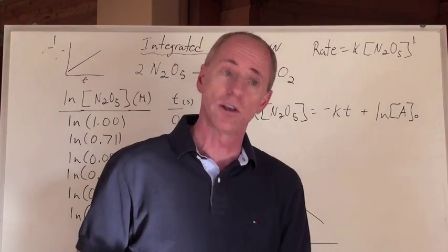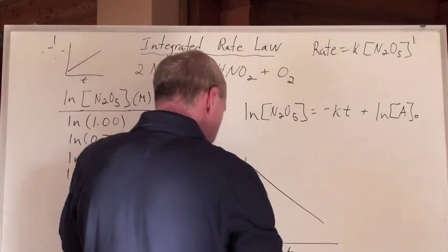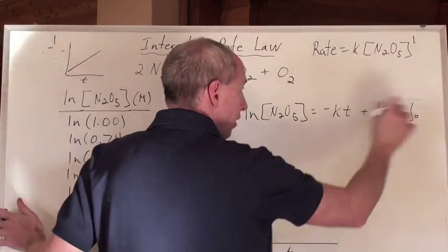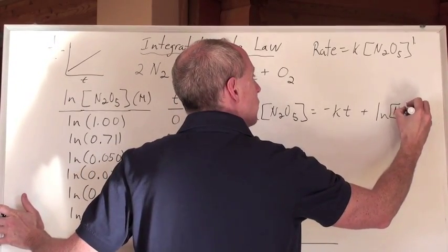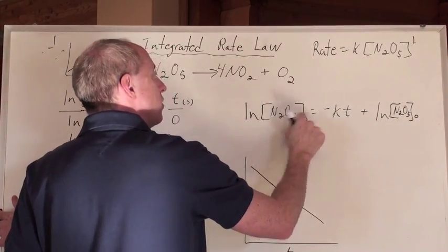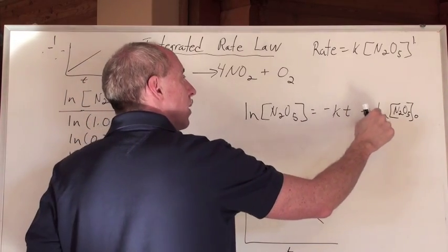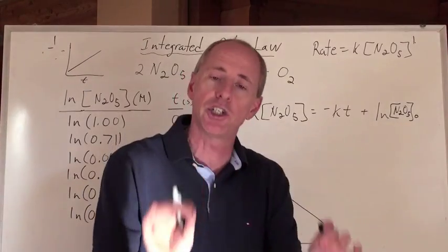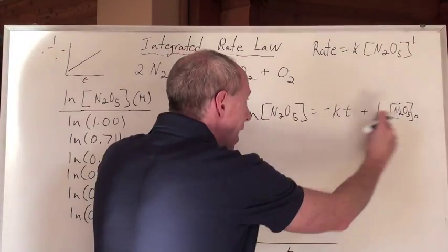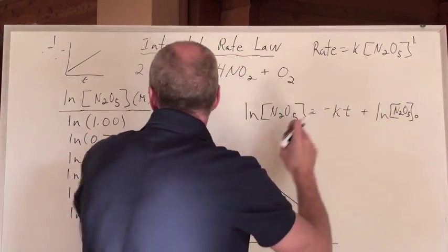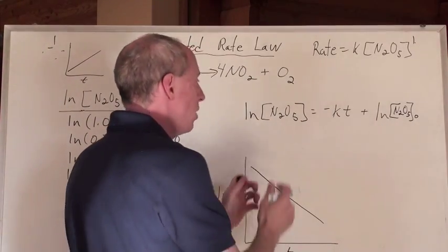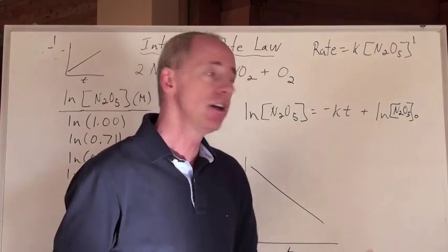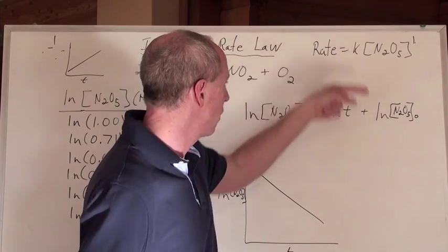Somebody says, what's the integrated rate law? You say, well the integrated rate law is this, where that concentration, generically would be A, but for this one it's N2O5, so the natural log of the concentration of the N2O5 equals negative KT plus the natural log of the concentration of the N2O5, that zero means initially. So, that equation was obeyed as a straight line relationship when we plugged it in.